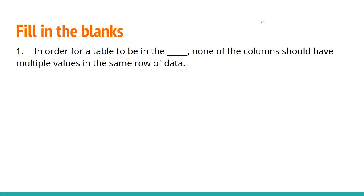It's the same sort of format as the other lectures. It starts with 10 fill-in-the-blank questions, then 10 multiple choice questions. The first question: in order for a table to be in the blank, none of the columns should have multiple values in the same row of data. Most of these fill-in-the-blank questions are pretty straightforward. So, in order for a table to be in the blank, none of the columns should have multiple values in the same row — what specifies that?